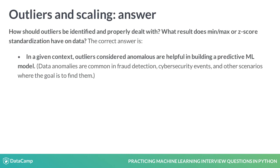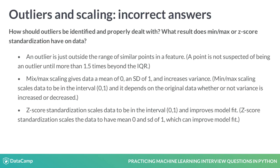The correct answer is that in certain contexts where the goal is to find fraud or cybersecurity events, for example, data anomalies are required in order to create a predictive machine learning model to detect them in the future. These are the reasons why the other answers are incorrect — make sure you understand them.